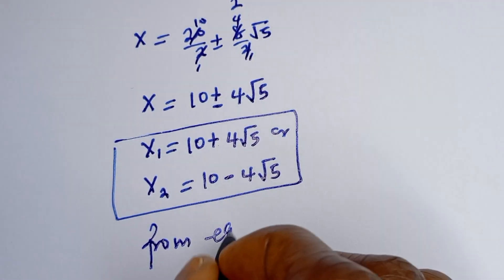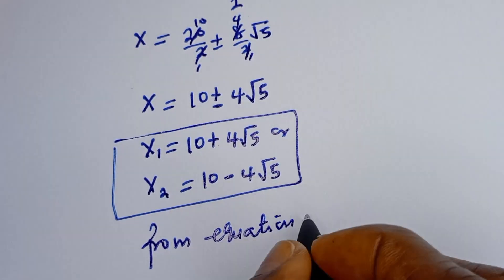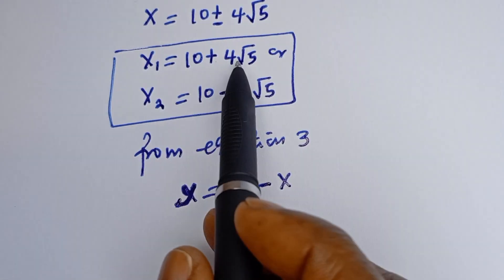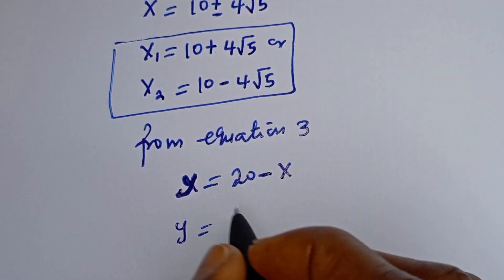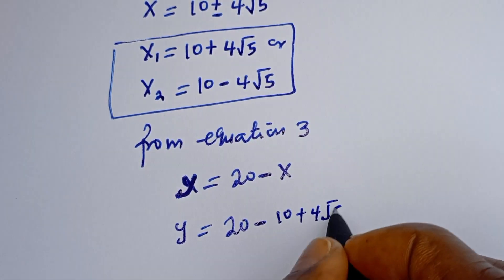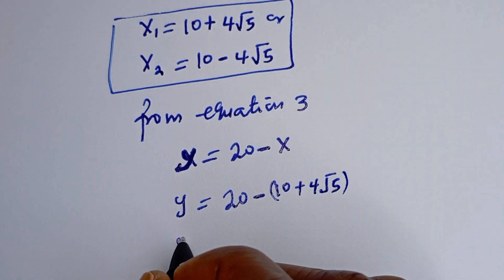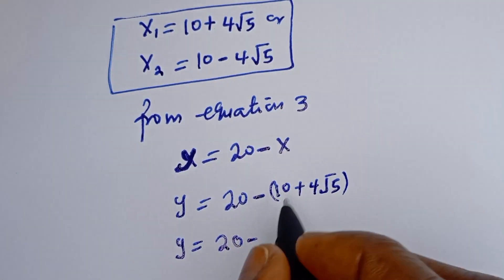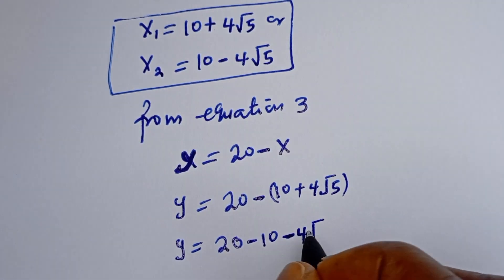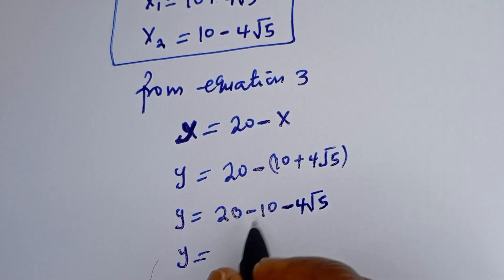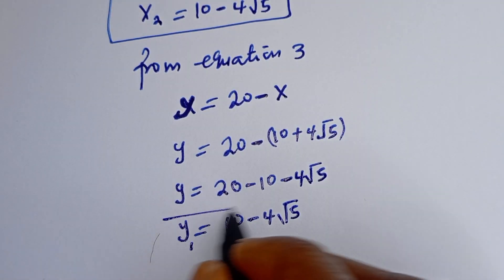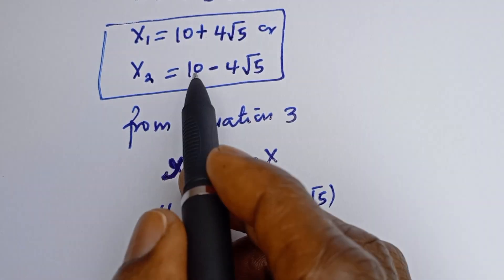From equation 3, Y is equal to 20 minus S. When S1 is equal to 10 plus 4 root 5, Y1 will be equal to 20 minus bracket 10 plus 4 root 5. Opening the bracket: 20 minus 10 minus 4 root 5, which gives Y1 is equal to 10 minus 4 root 5.